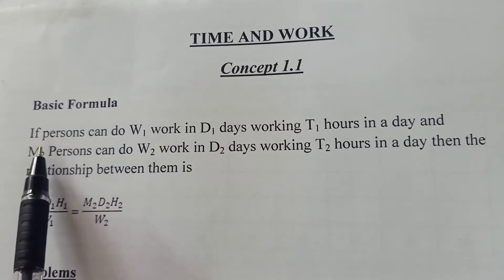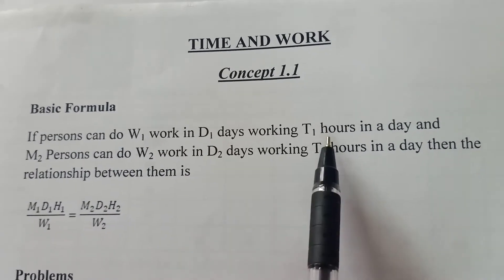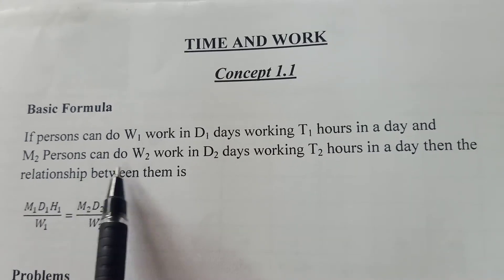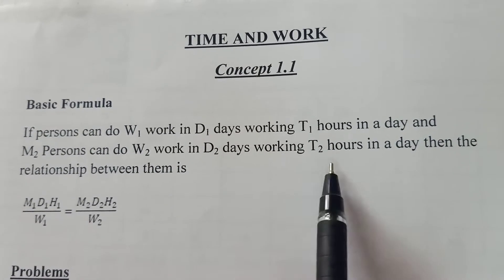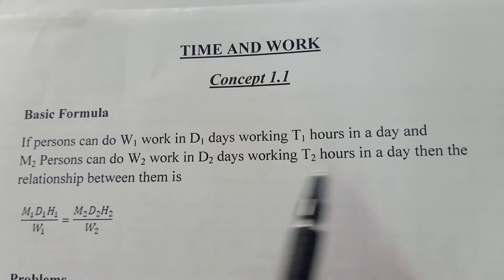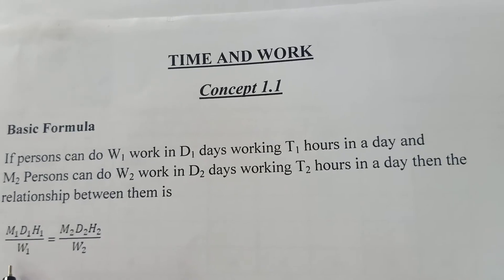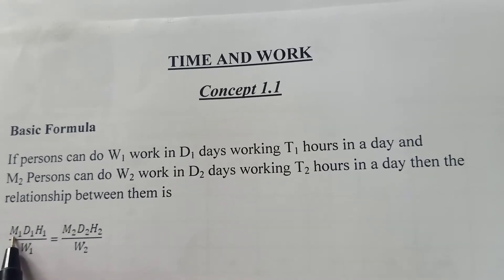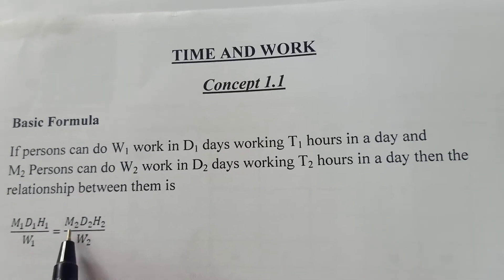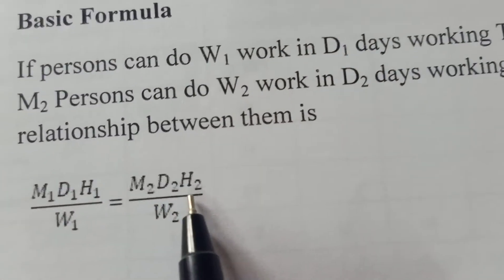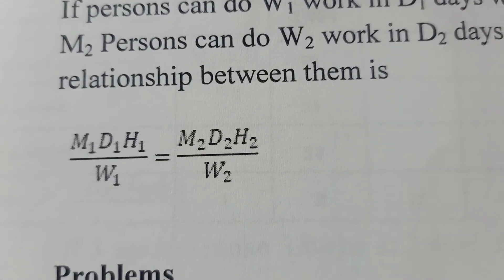Please listen, if a person can do W1 work in D1 days working T1 hours in a day, and M2 persons can do W2 work in D2 days working T2 hours in a day, then the relationship between them is M1 D1 H1 W1 equal to M2 D2 H2 W2. This is the same as which I said earlier. We'll move to the examples.